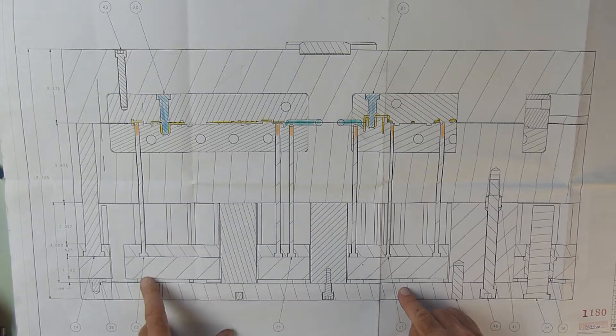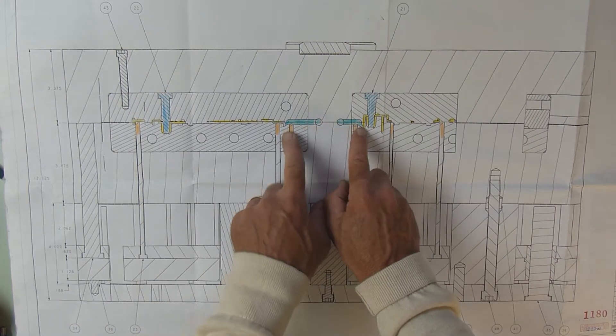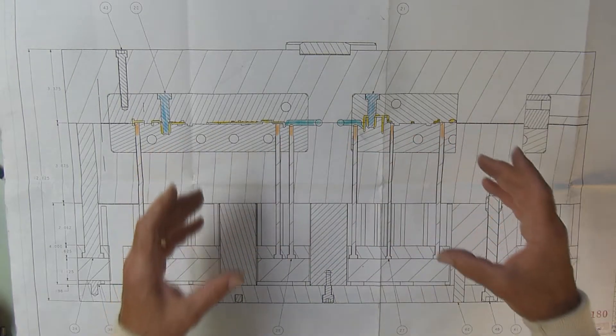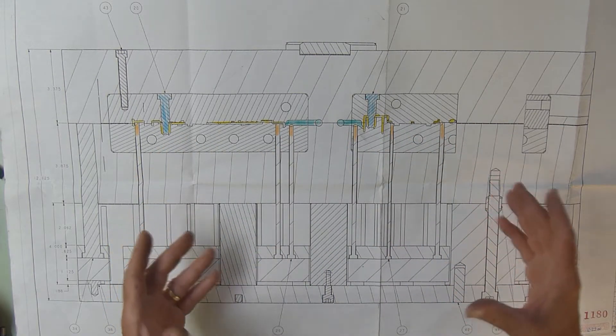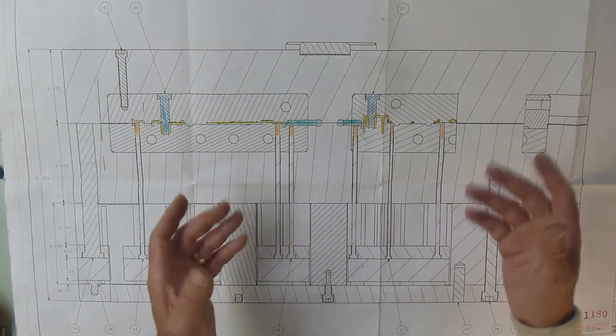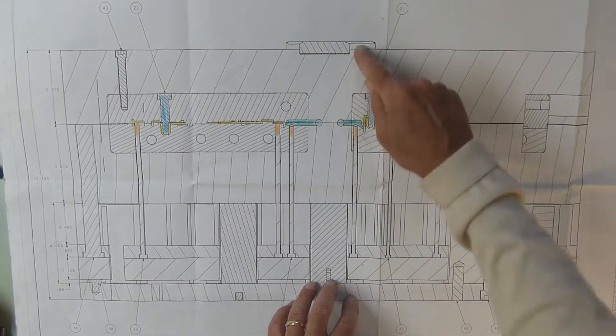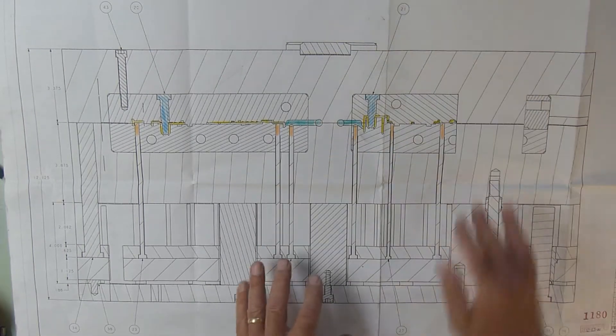Now the plastic's going to come in, be injected into the mold, it's going to set for a predetermined amount of time. The mold will figure that out—the more you cool the mold, the faster it runs. And then the mold will open. This A and B plate will split.